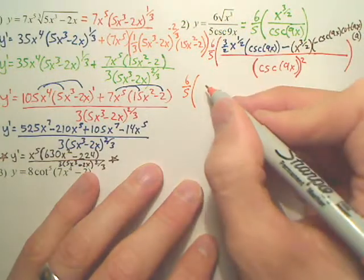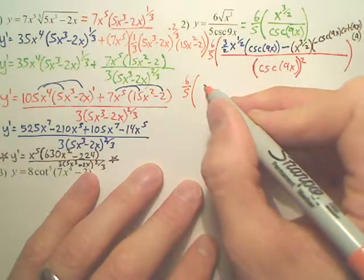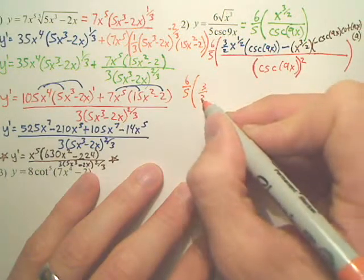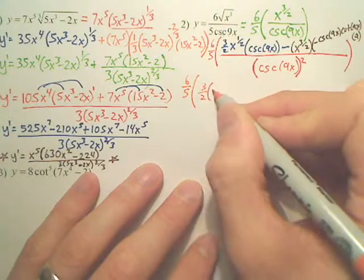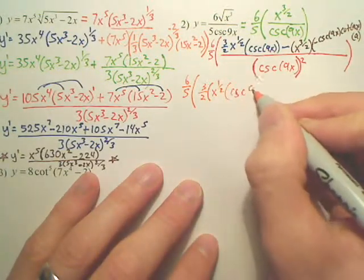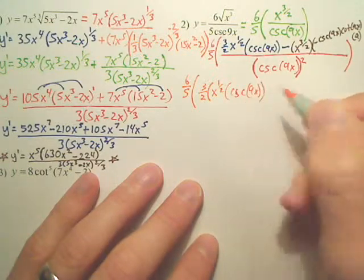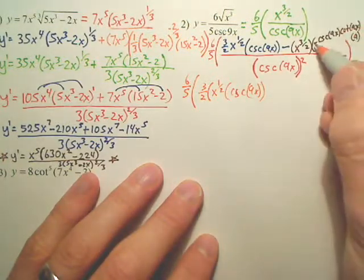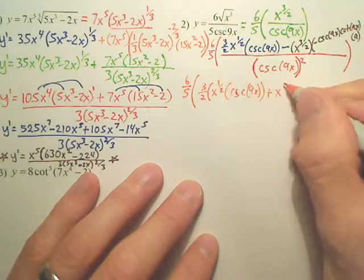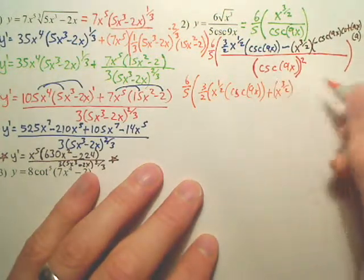The top, you get 3 over 2, x to the 1 half cosecant 9x. And then you have two negatives, right? So that becomes a plus. x to the 3 over 2.